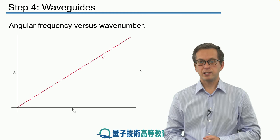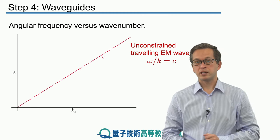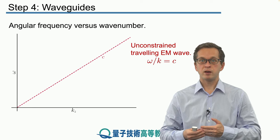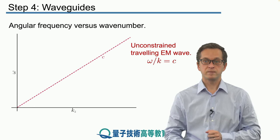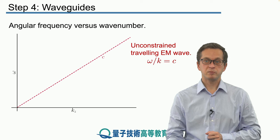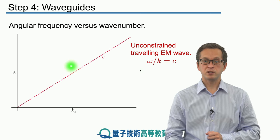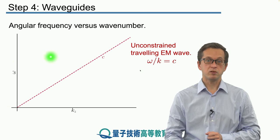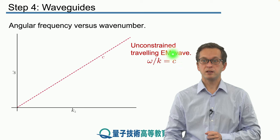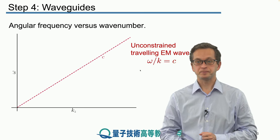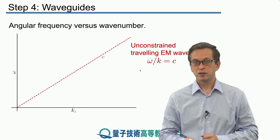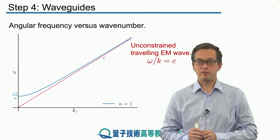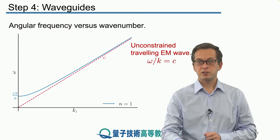This dashed red line is for the case of an unconstrained wave. In other words, a plane wave traveling in free space. And we know that for such a case, the speed of propagation is c, which is the gradient of the light. Because omega divided by kz is equal to c.